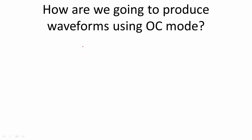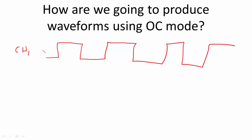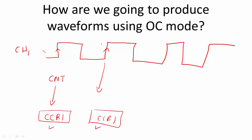How are we going to produce waveforms using output compare mode? If you have understood input capture mode, understanding this mode is really simple. In input capture, channel 1 was configured as input, a signal was supplied, and whenever the configured edge (e.g., rising edge) was detected, the counter value was saved into the capture and compare register and an interrupt was triggered. Output compare mode is exactly the reverse of that.